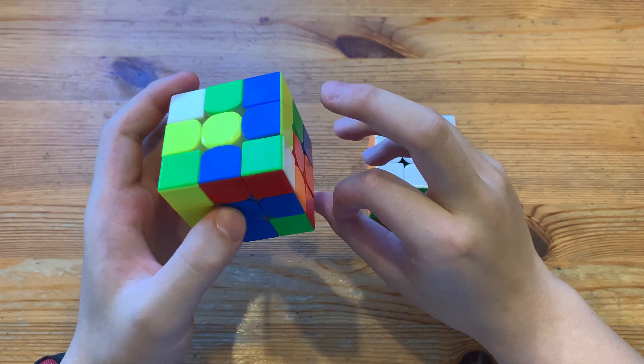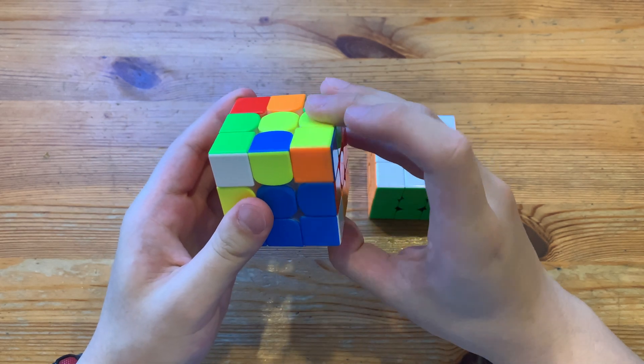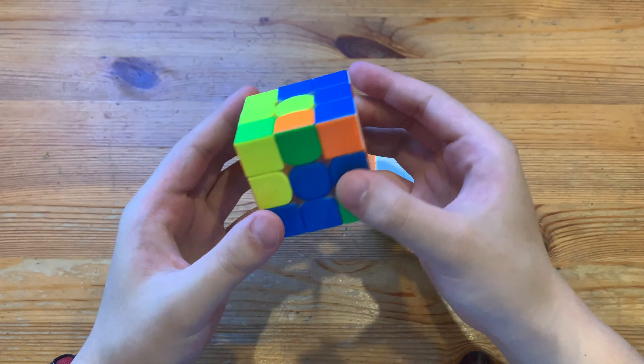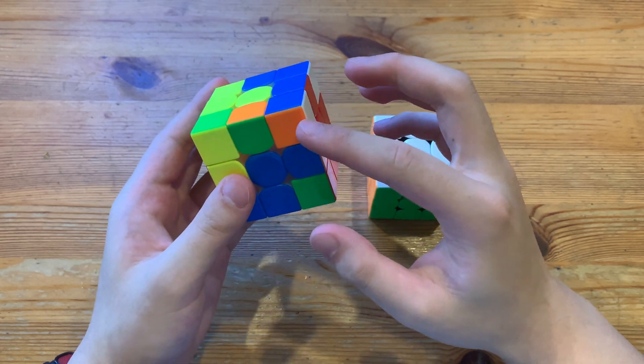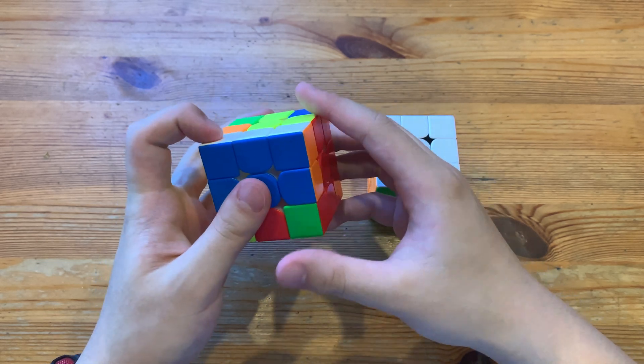And here, I have this pair, which I'll do like that. And next, I have this pair, so I'll solve this pair with r prime, f to r, f prime.